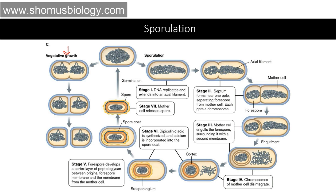Now, let us imagine that instead of continuing vegetative growth, the environment has turned very difficult for the cell to survive — even if they divide, new cells will not survive in the environment, which is sensed by the bacterial cell. So they will opt for sporulation. The very first step is DNA replication — the replication starts extending into an axial filament. While forming the axial filament, it is not like the typical septum that forms equally from the middle. In this case, the septum forms near one pole, separating the forespore from the mother cell, and at this time DNA is being replicated and transported to that forespore.